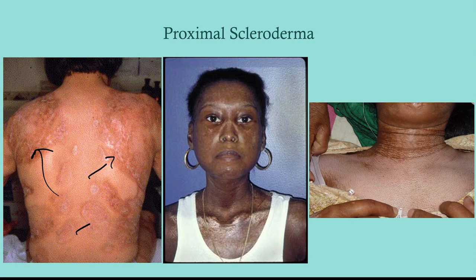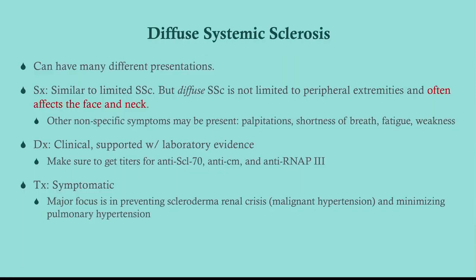In patients of color, you can notice depigmentation — you won't notice it in someone with very light skin, but in someone with darker skin it creates a salt-and-pepper appearance. Sclerotic skin may also be described as shiny. Diffuse systemic sclerosis looks like limited, but then you get all these additional symptoms: more extensive scleroderma, and renal and lung involvement.